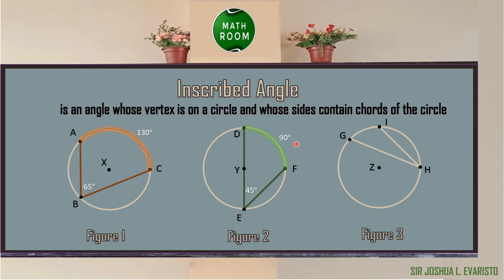On figure number 3, we have angle GHI, which is the inscribed angle, and the intercepted arc is arc GI. If the measurement of the inscribed angle is 15.5 degrees, what is the measurement of the intercepted arc? The measurement of the intercepted arc is 31 degrees. You can also notice that the center of the circle is in the exterior of the angle.